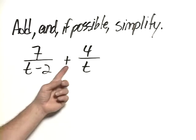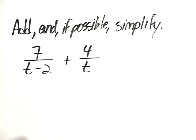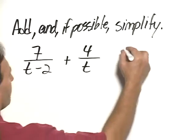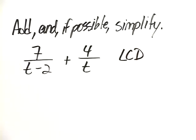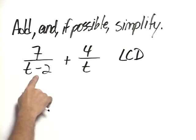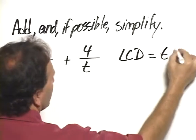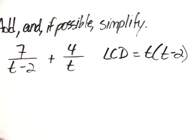In order to add these two rational expressions, the denominators must be the same. So the first thing we need to do is find the LCD. The LCD in this case will simply be the product of the two denominators, t times t minus 2.